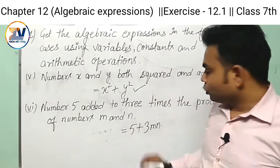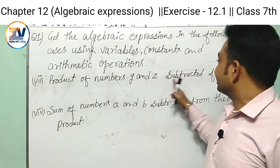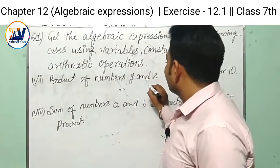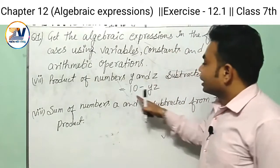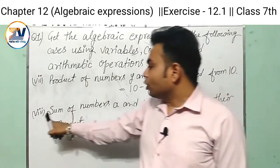Second one: product of numbers y and z subtracted from 10. So now firstly we find the product of y and z, there is yz, and subtracted from 10, that means 10 minus yz. This is the expression of this part.